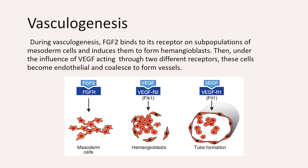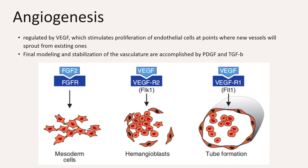During vasculogenesis, fibroblast growth factor 2 (FGF2) will bind to its receptor on mesodermal cells and cause those cells to become hemangioblasts. Then under the influence of vascular endothelial growth factor, or VEGF, the hemangioblast cells become endothelial and coalesce to form the blood vessels. Angiogenesis is regulated by VEGF, which stimulates the proliferation of endothelial cells at points where new vessels form from pre-existing ones. The final modeling and stabilization of the blood vessels are accomplished by PDGF and TGF-beta.